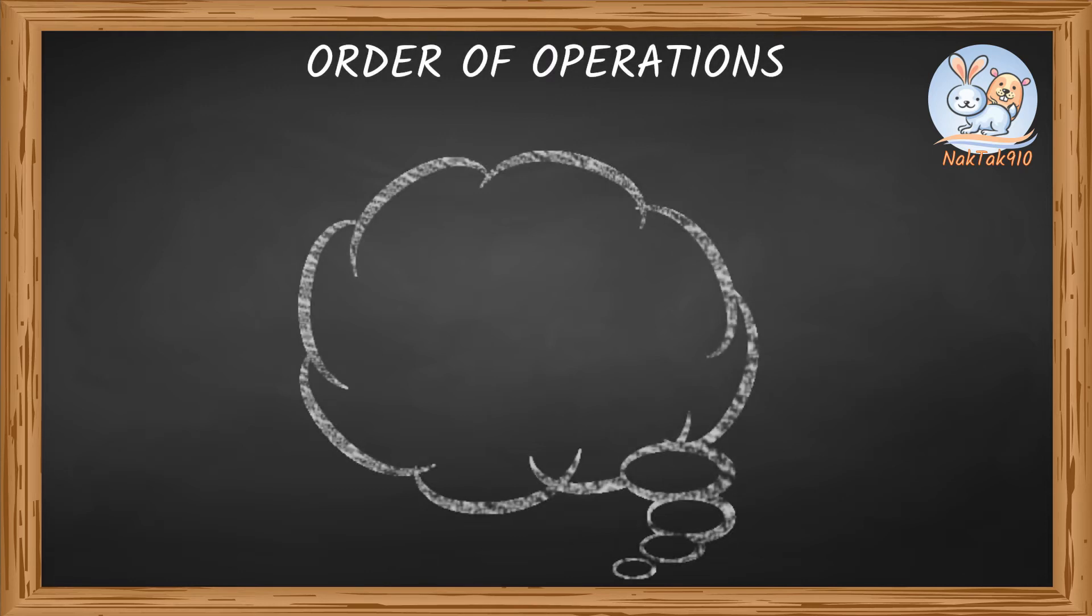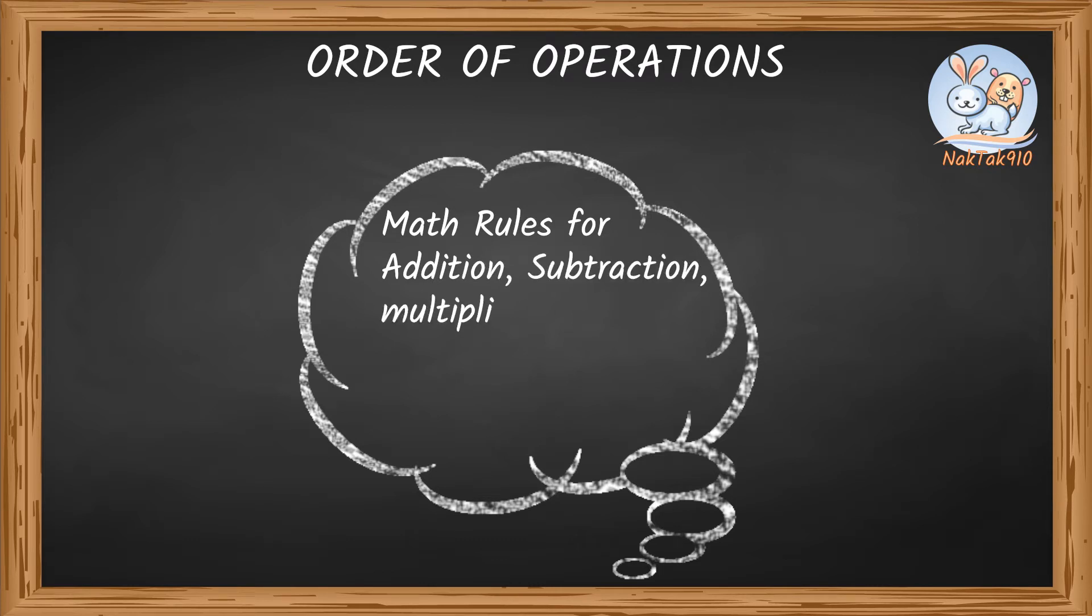Order of Operations is a set of math rules that tells us which math operations, like addition, subtraction, multiplication, division, to do first.